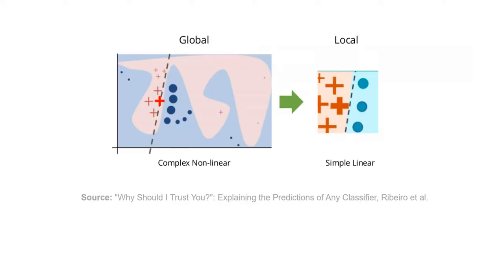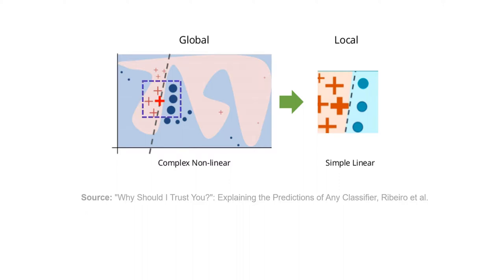To explain this further, recall that the decision boundary of a complex model can be highly non-linear. For instance, here we have a classification problem and only this complex function on the left can separate the two classes. Sometimes it just doesn't make sense to provide explanations for the global model, and instead many approaches zoom into a local area. Then they explain the individual predictions made at that decision boundary. We will talk about this in more detail when we have a look at LIME, which is a local explainability approach.